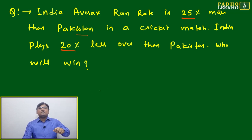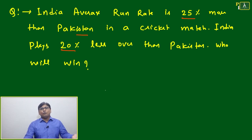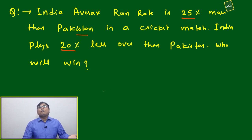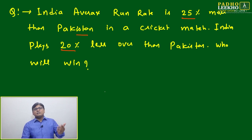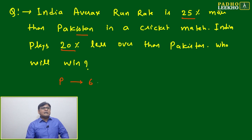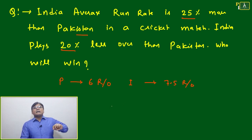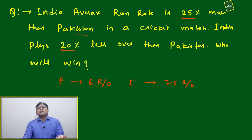India's average run rate is 25% more — so if Pakistan is making 6 runs per hour, India is making 25% more than that. One-quarter of 6 is 1.5, so 6 plus 1.5 equals 7.5. That means India will make 7.5 runs per hour compared to Pakistan's 6.